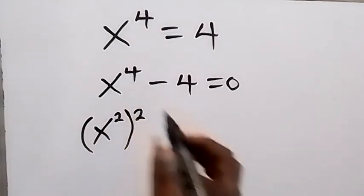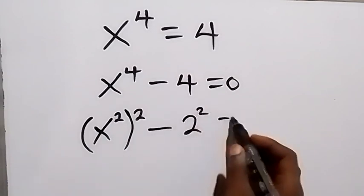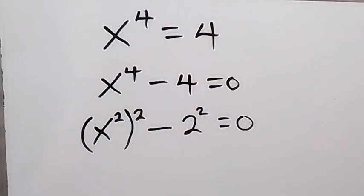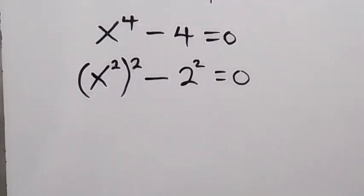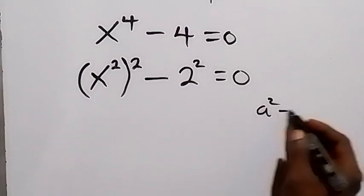Then minus 4 can be expressed as 2 squared, which is equals to 0. And from here this follows the pattern of difference of two squares. When we have a squared minus b squared,